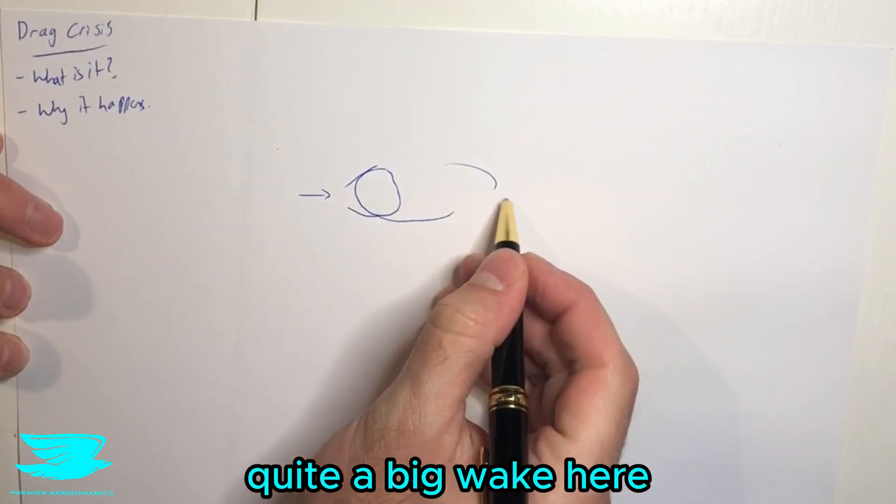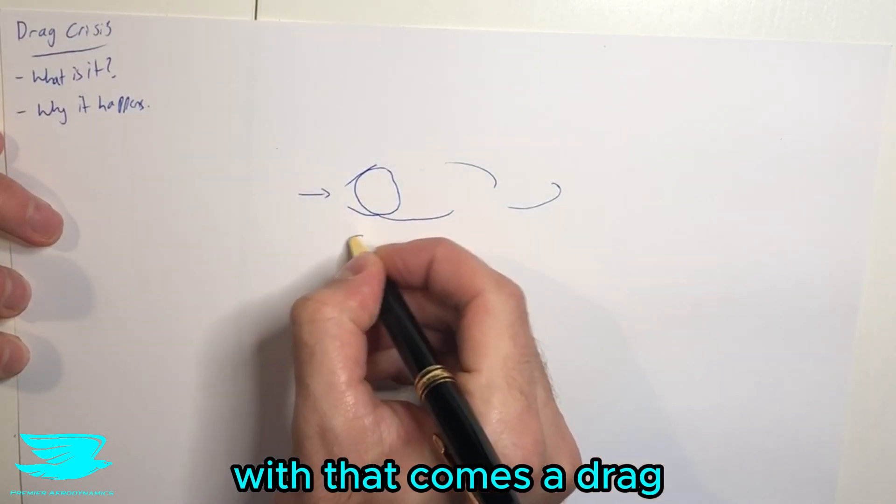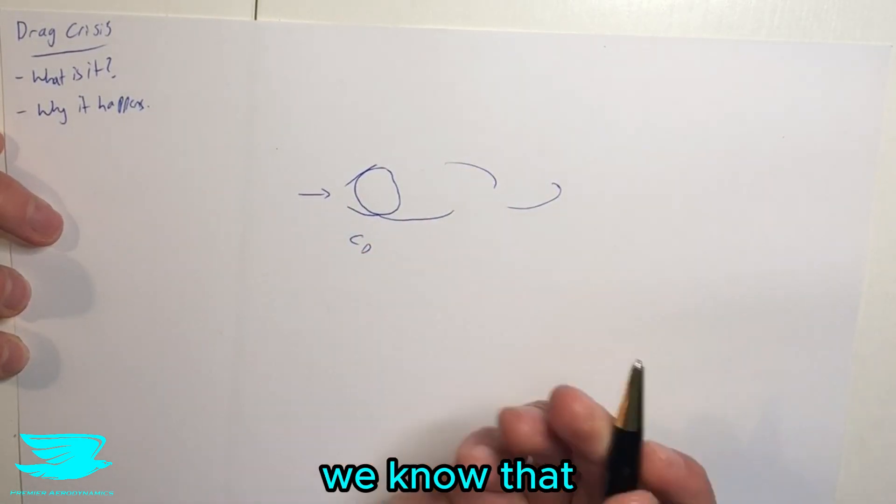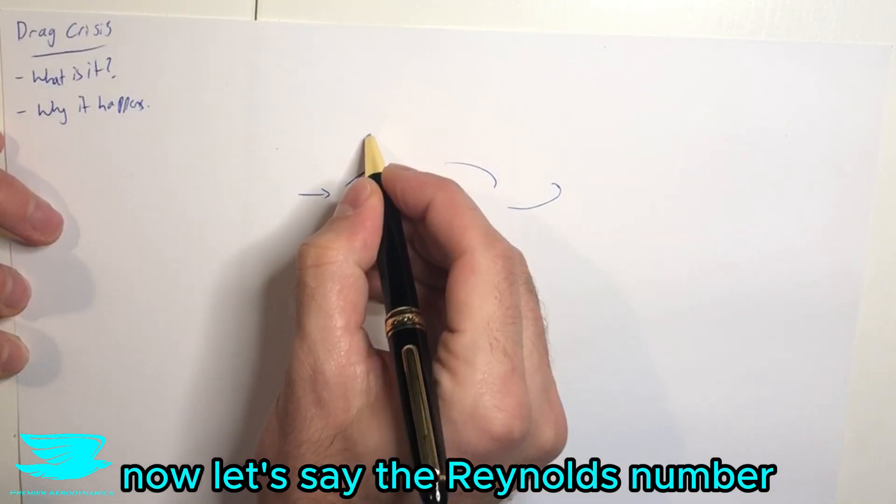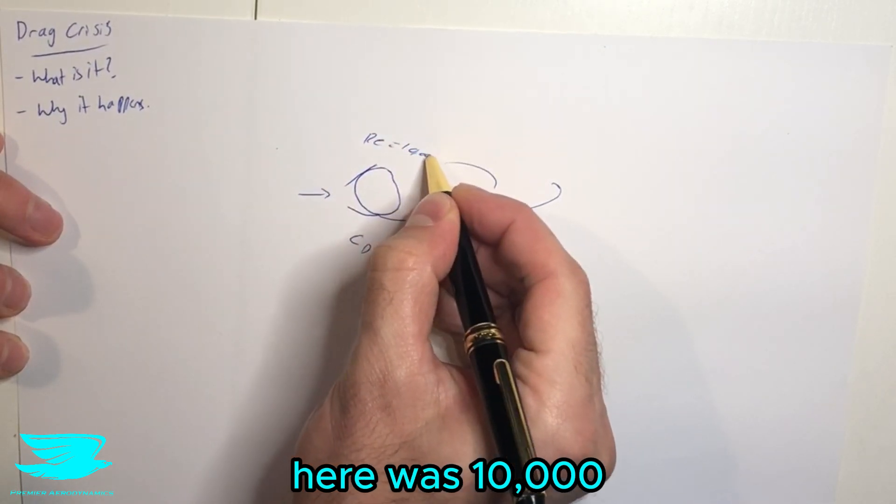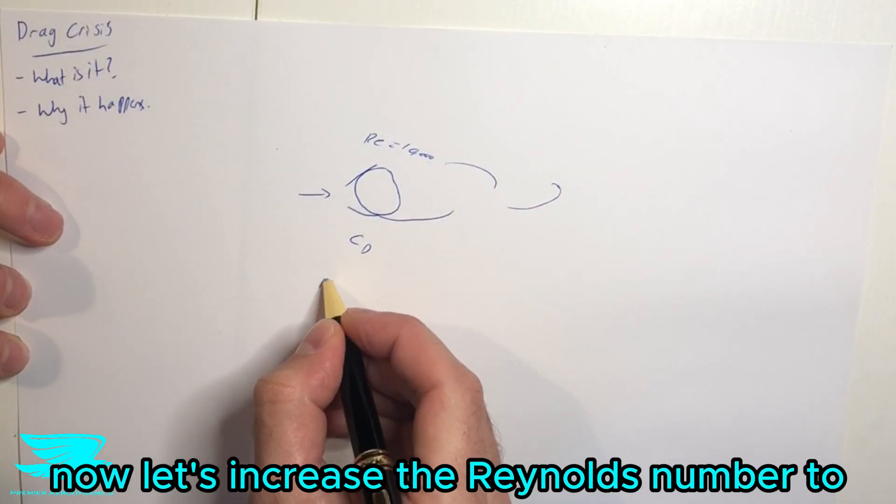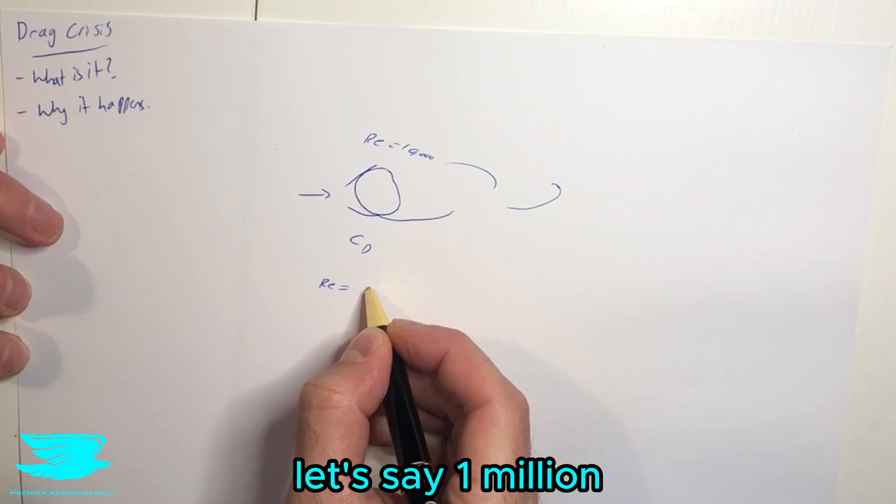And we start getting quite a big wake here. With that comes a drag, a drag coefficient. We know that. Now let's say the Reynolds number here was 10,000. Now let's increase the Reynolds number to let's say 1 million.